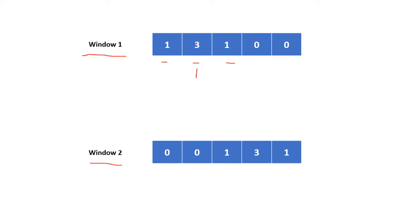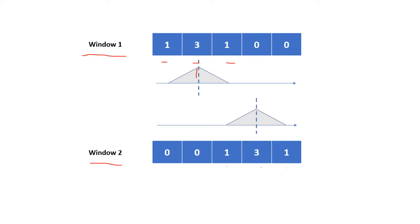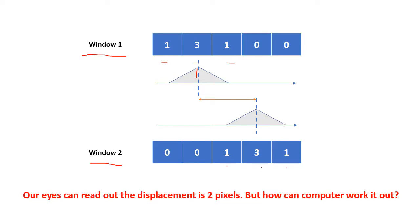Then we have window 2, where the same particle has moved. It has the same identical intensity distribution — 1, 3, 1 — so if we plot it using a triangle as the particle intensity, the peak is here and the sides are lower. By comparing window 1 and window 2, we can count the displacement of the particle centroid: it moves 2 pixels. Using our eyes we can read out the displacement is 2 pixels.